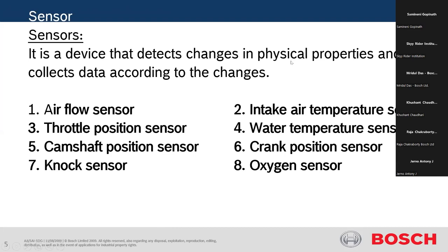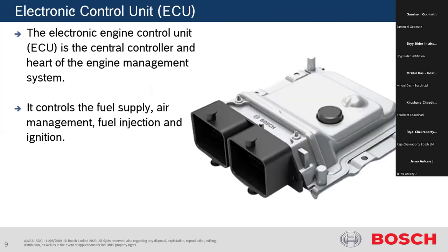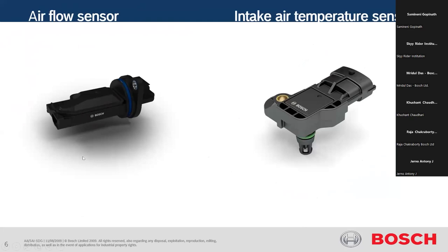Sensors share their data to the Electronic Control Unit — we call it ECU. Some companies call it Electronic Diesel Control, some call it Electronic Engine Control, but basically all are the same. This device is connected to all the sensor elements and gets data from the sensors. This is what the ECU looks like — connected to all sensor elements receiving data.